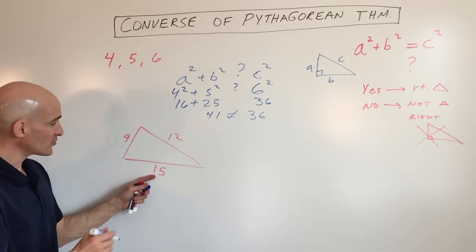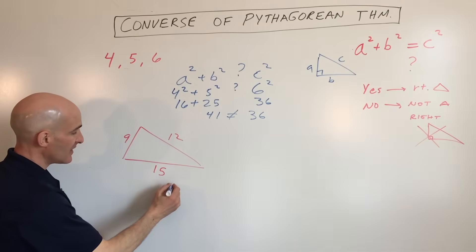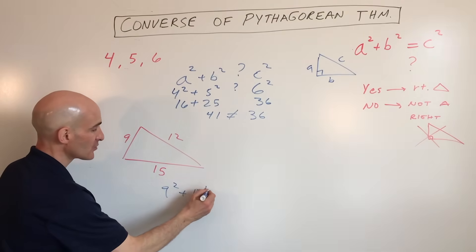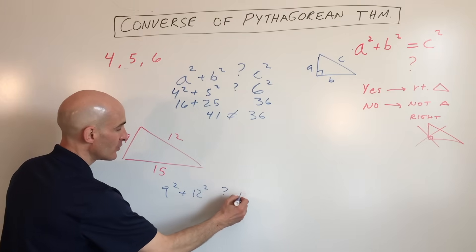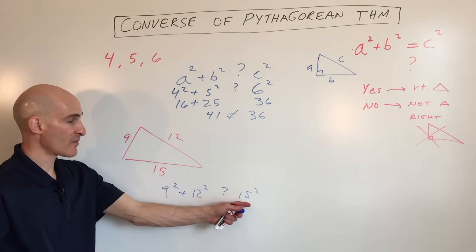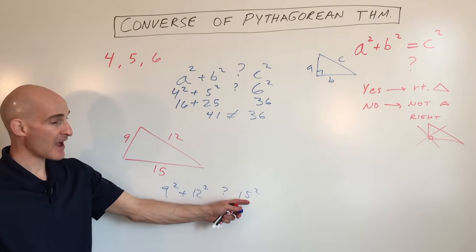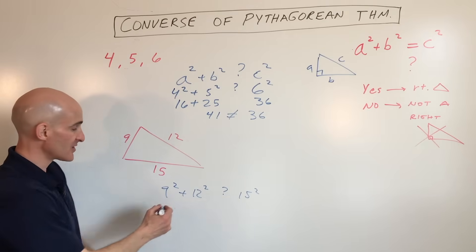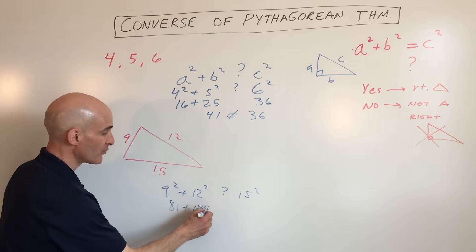But we're going to do the Pythagorean converse. We're going to say 9 squared plus 12 squared. Does it equal 15 squared? And remember, 15 is the one that we're testing for the hypotenuse. That's the longest side. So let's simplify. We get 81 plus 144.